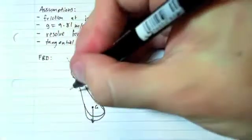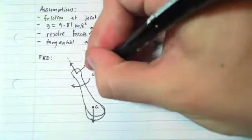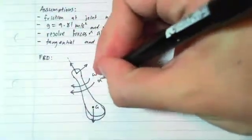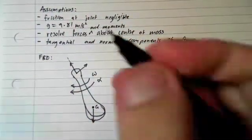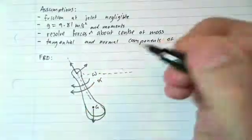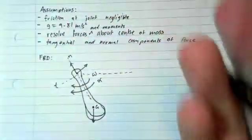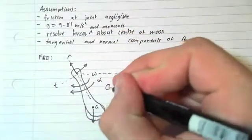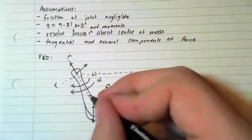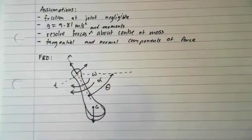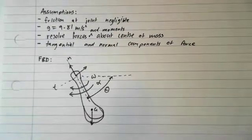We also have the angular velocity of the pendulum, which we'll denote as omega, and the angular acceleration of the pendulum, which is alpha. We also have the angle at which the pendulum is to the horizontal axis. In the question, it stipulates that theta is 45 degrees when we're making these calculations.